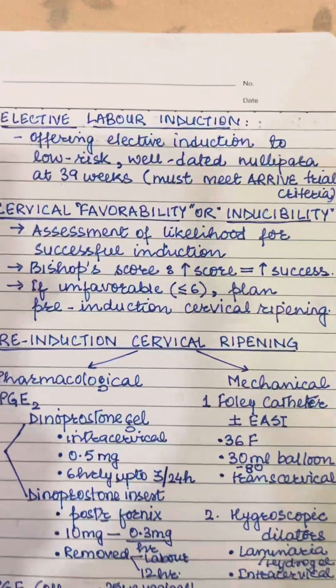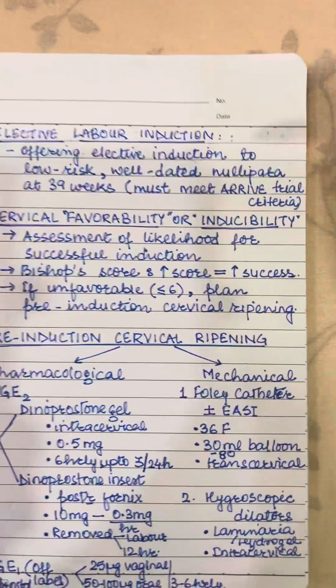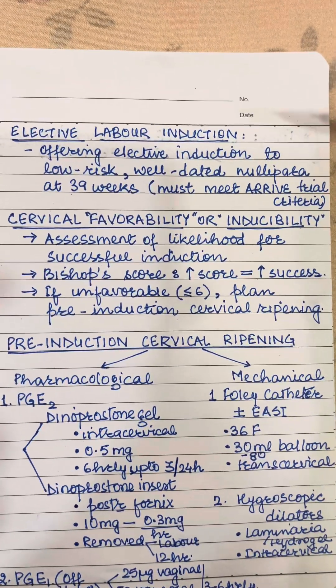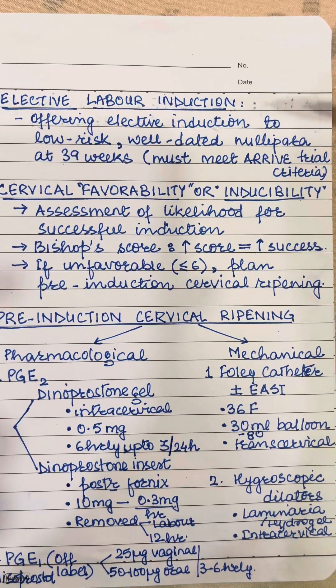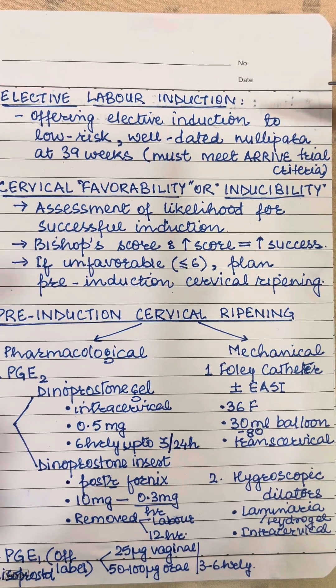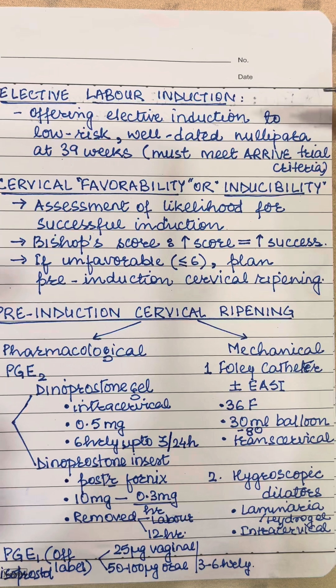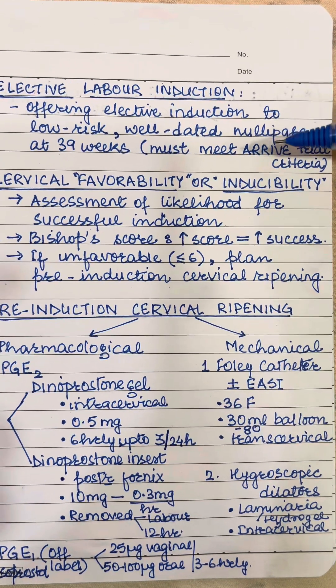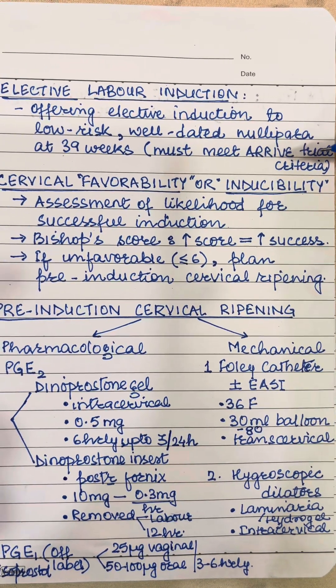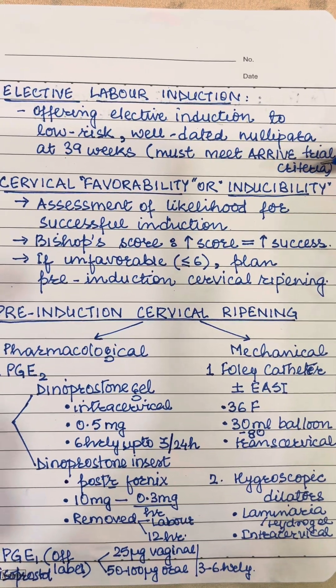A recently introduced term is elective labor induction. This is offering elective induction to low-risk, well-dated nullipara at 39 weeks, but the patient should meet the ARRIVE trial criteria.